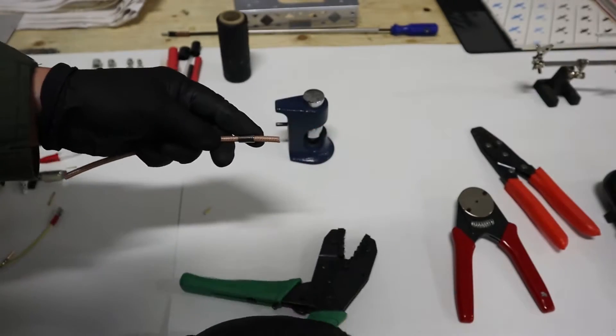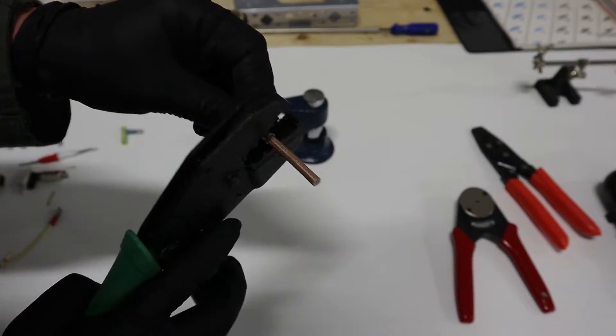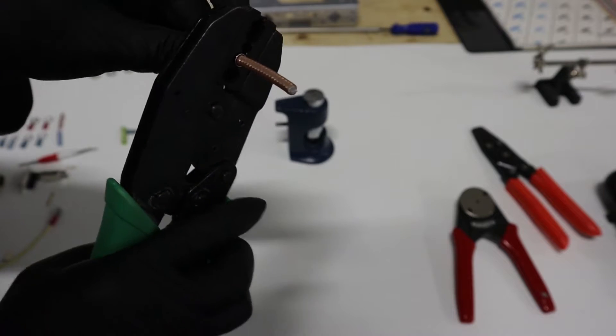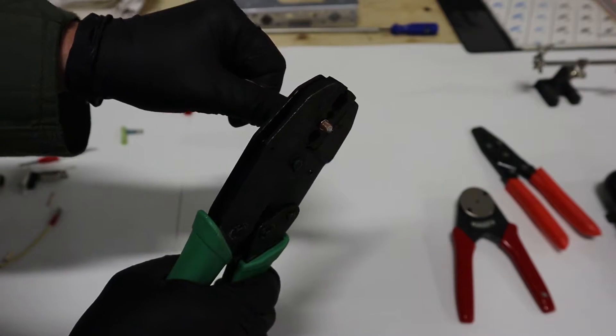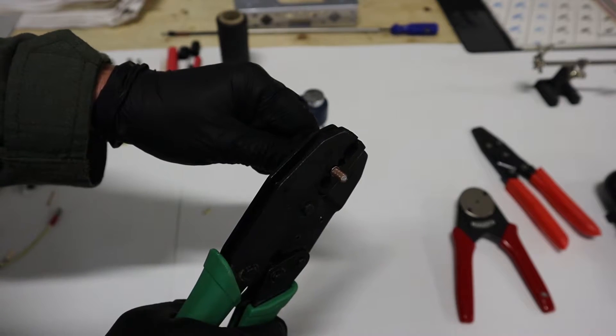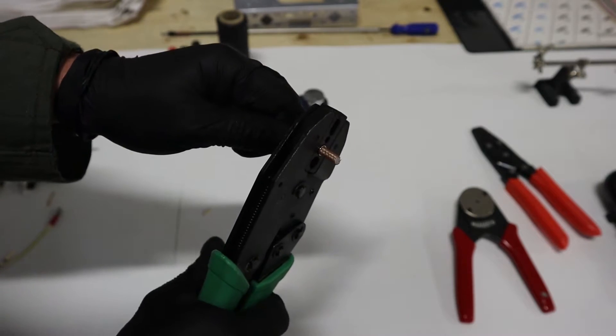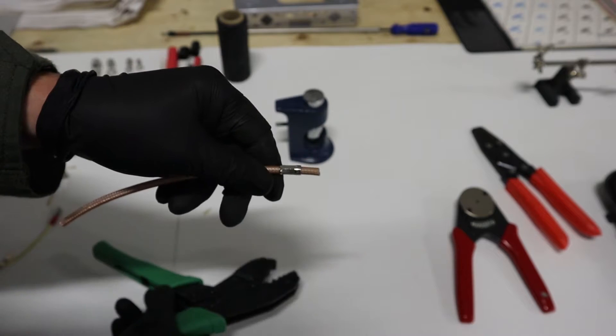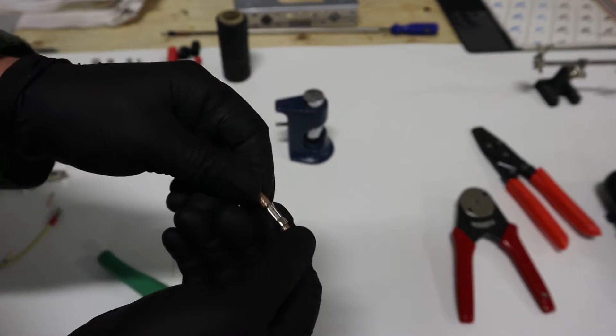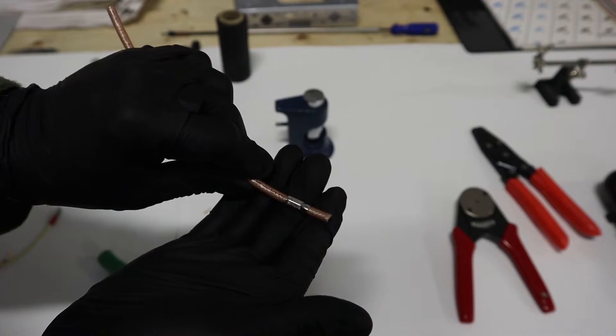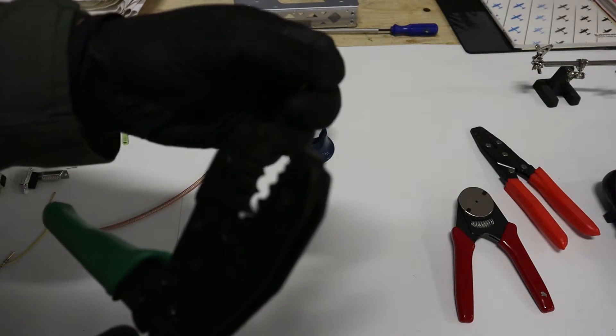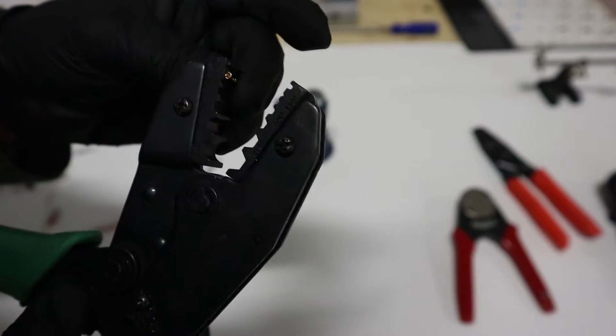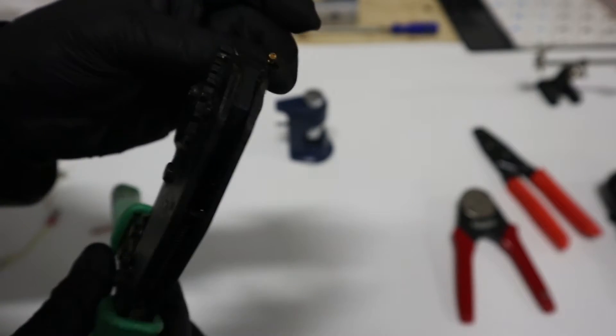There's another video if you want to look up radio problems where I show replacing the BNC connector on the radio. And when you crimp this one, you'll see it crimps it into a hexagonal shape, and that of course will be at the base of the BNC connector. I'm just showing you what the tool does here. And the little pin gets crimped as well, and there's a fitting on the end of this tool to crimp the pin.